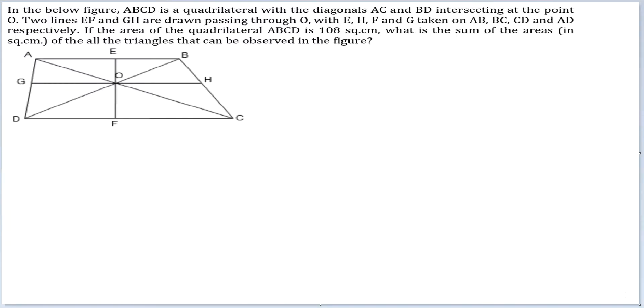Let's look at this question. In the figure below, ABCD is a quadrilateral with diagonals AC and BD intersecting at point O. Two lines EF and GH are drawn passing through O with E, H, F, G taken on AB, BC, CD and AD respectively.